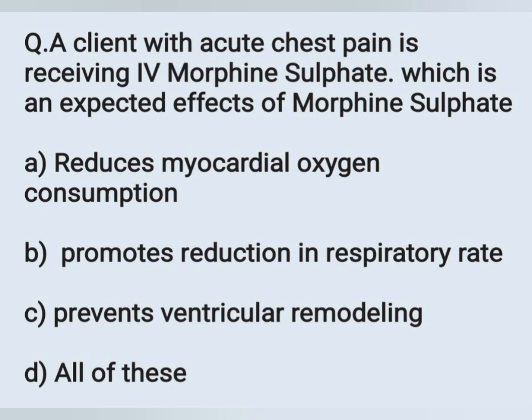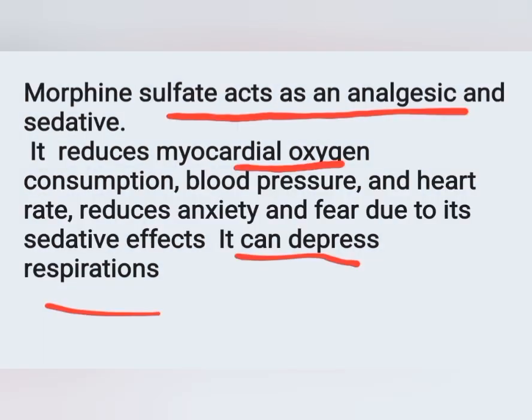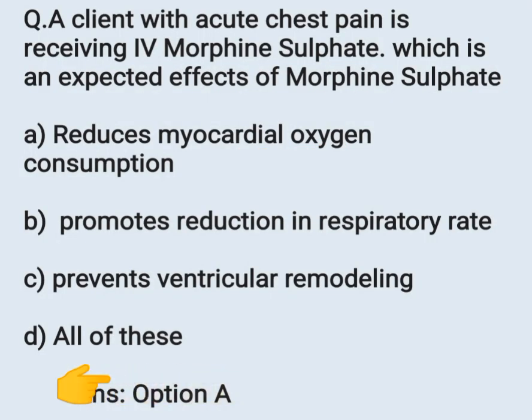Morphine sulfate is an analgesic and sedative. It reduces myocardial oxygen consumption, blood pressure, and heart rate, and also reduces anxiety and fear due to its sedative effect. It can depress respiration or reduce respiratory rate as a main side effect. The correct answer is option A, reduces myocardial oxygen consumption.